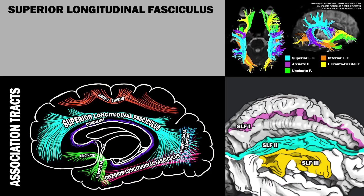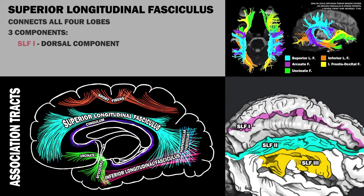First, there's the superior longitudinal fasciculus. The superior longitudinal fasciculus connects all four lobes, sending signals bidirectionally, and has three distinct components: SLF1, SLF2, and SLF3.